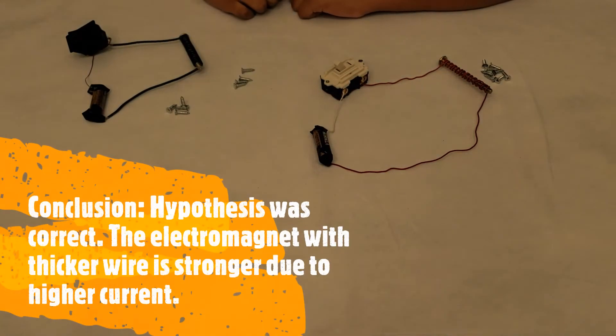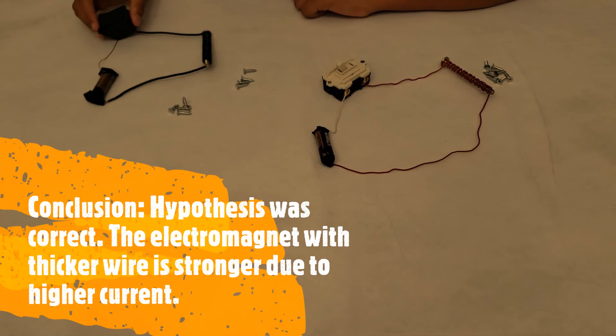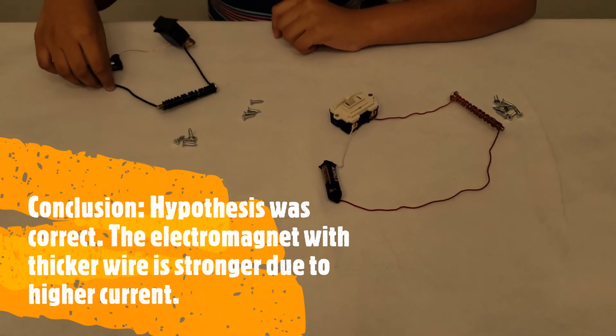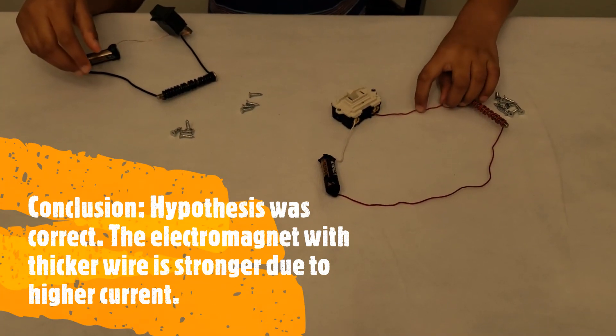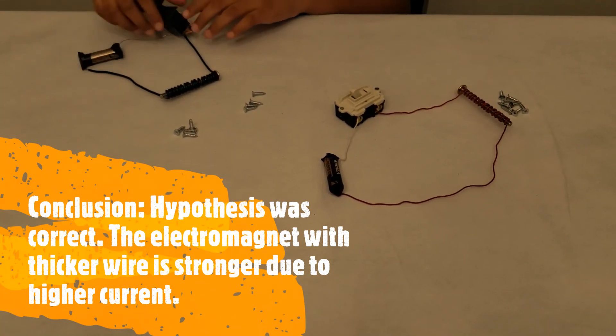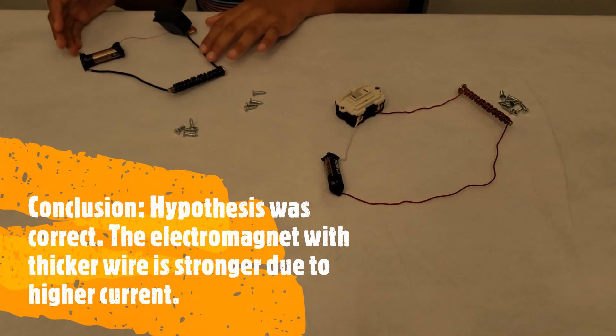So in conclusion, the thicker wire is best for creating a stronger electromagnet than it would with a thinner wire because there will be more electrons, meaning more current.